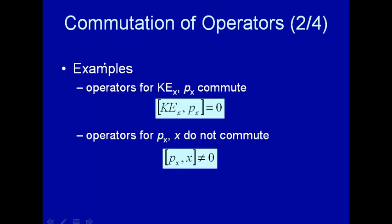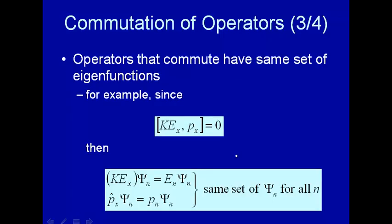So px and x do not commute. Why are these things important? Why is it important to determine whether two operators in quantum mechanics commute? One reason is that operators that do commute have the same set of eigenfunctions. For example, we just showed that the kinetic energy operator in one dimension and the momentum operator in the same dimension commute. Therefore, if you find the eigenfunctions of the kinetic energy operator, those are the same eigenfunctions for momentum in the x direction — psi_n will be the same. You solve one problem, get the eigenfunctions, and if another operator commutes with it, you already have those eigenfunctions.